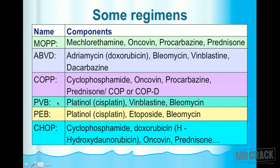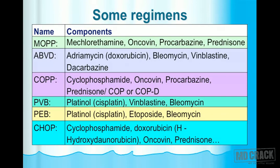PVB regimen: P = platinol (cisplatin), V = vinblastine, B = bleomycin. PEB regimen: P = platinol, E = etoposide, B = bleomycin. CHOP regimen: C = cyclophosphamide, H = hydroxydaunorubicin (doxorubicin), O = oncovin, P = prednisone. These represent six or seven important anti-cancer regimens worth remembering.